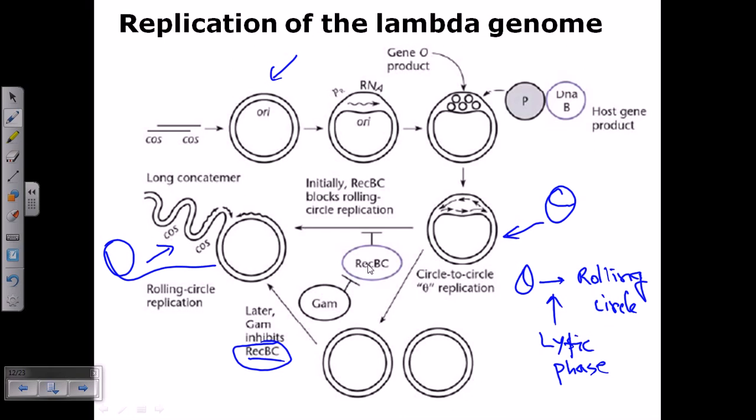As the rolling circle mode is usually going on, REC-BC is the important protein which is blocking the rolling circle mode of replication and allowing the theta mode of replication. Now as the GAM is